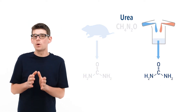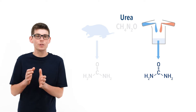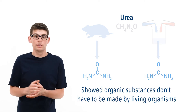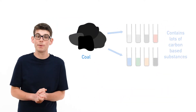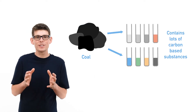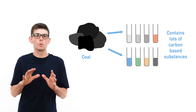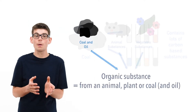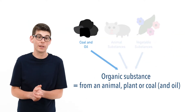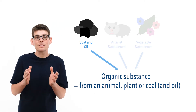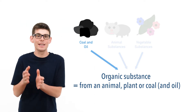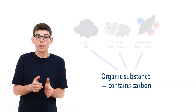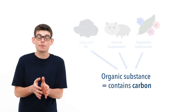This showed that organic molecules don't have to come from or be made by living organisms. During the 1800s, when coal started being analysed, lots of new carbon-containing compounds were discovered, and the definition of organic chemistry started to widen and incorporate carbon-containing compounds from coal and later on oil. It started to be accepted that organic simply meant a substance that contained carbon, rather than referring to a substance that came from a living thing.